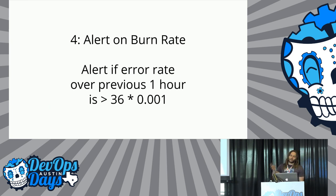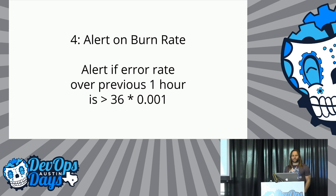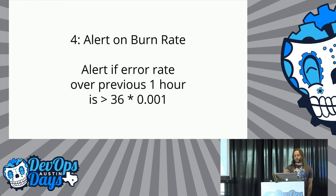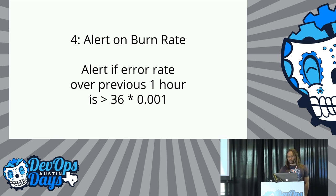To improve upon the previous solutions, we want to create an alert with good detection time and high precision. To this end, you can introduce a burn rate. Burn rate is how fast, relative to the service level objective, the service consumes the error budget. So 5% of a 30-day error budget spent over one hour requires a burn rate of 36. An example alert on burn rate would be: alert if error rate over the previous one hour is greater than 36 times 0.001 — our allowed error threshold.